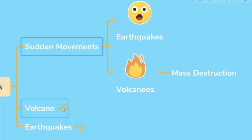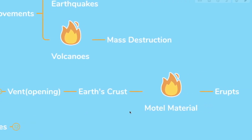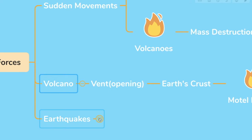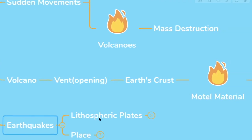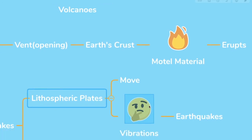Now, what's a volcano? It's basically a vent in the earth's crust through which the molten material erupts. And what are earthquakes? When the lithospheric plates move, it creates vibrations which are called earthquakes.